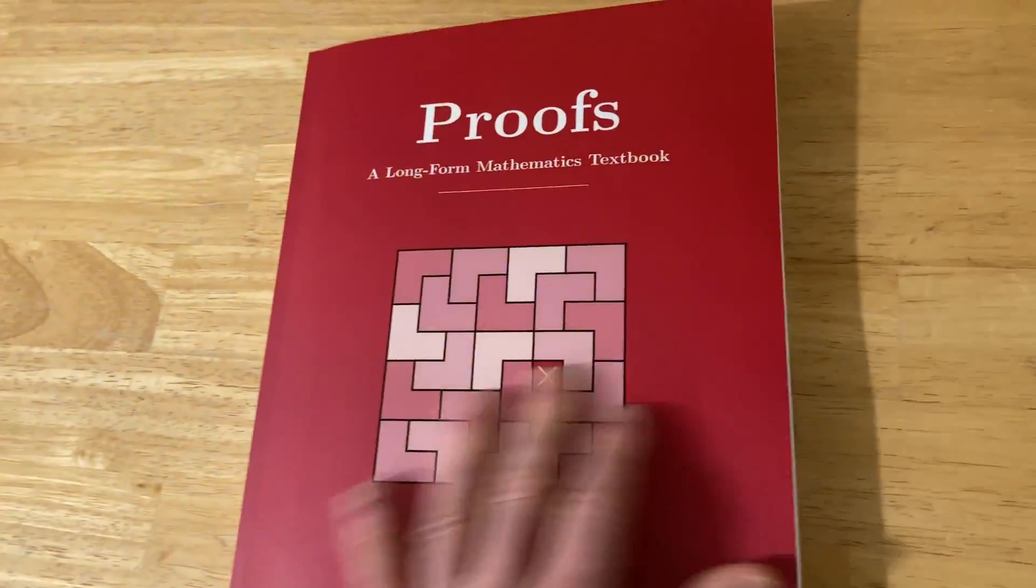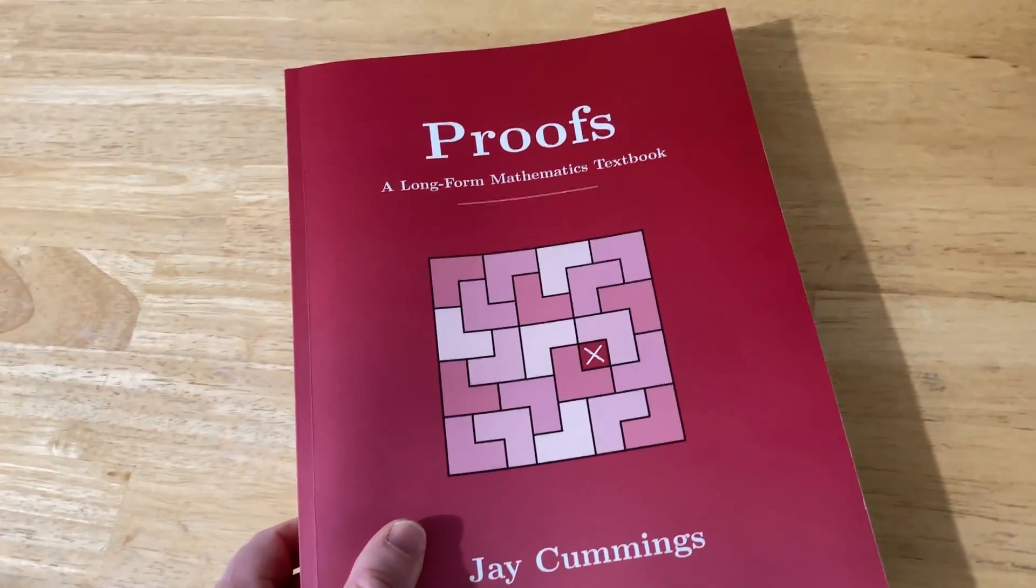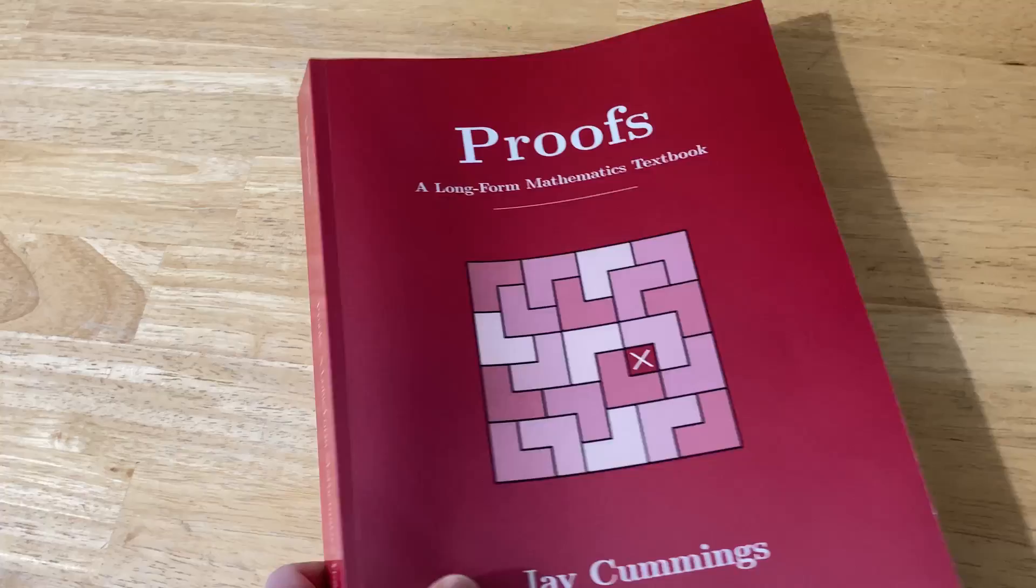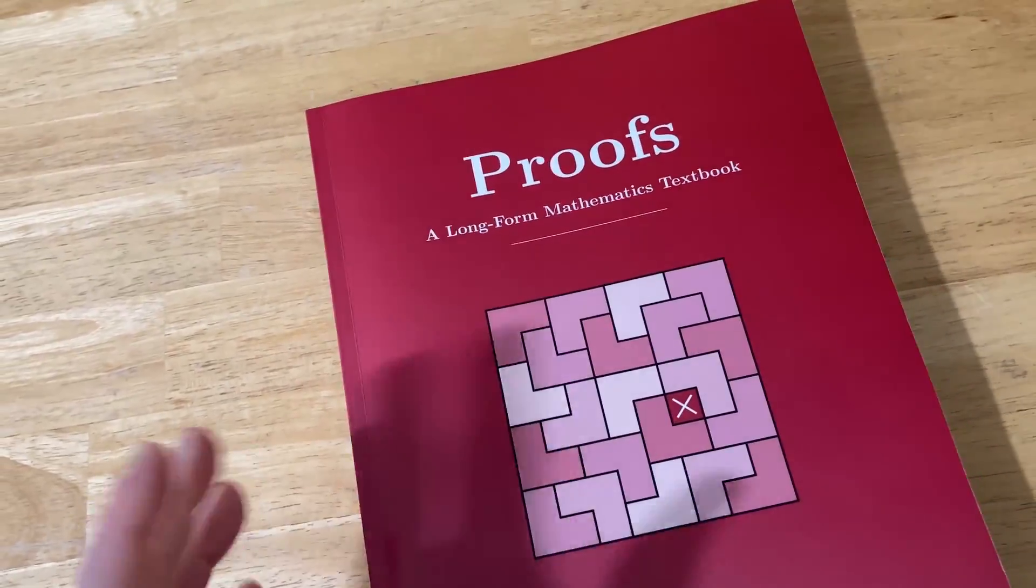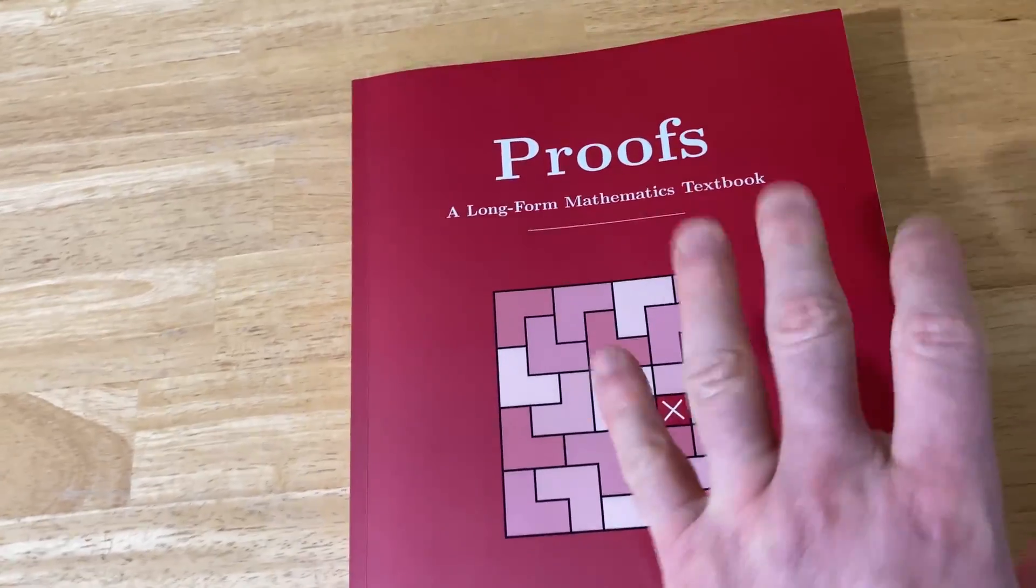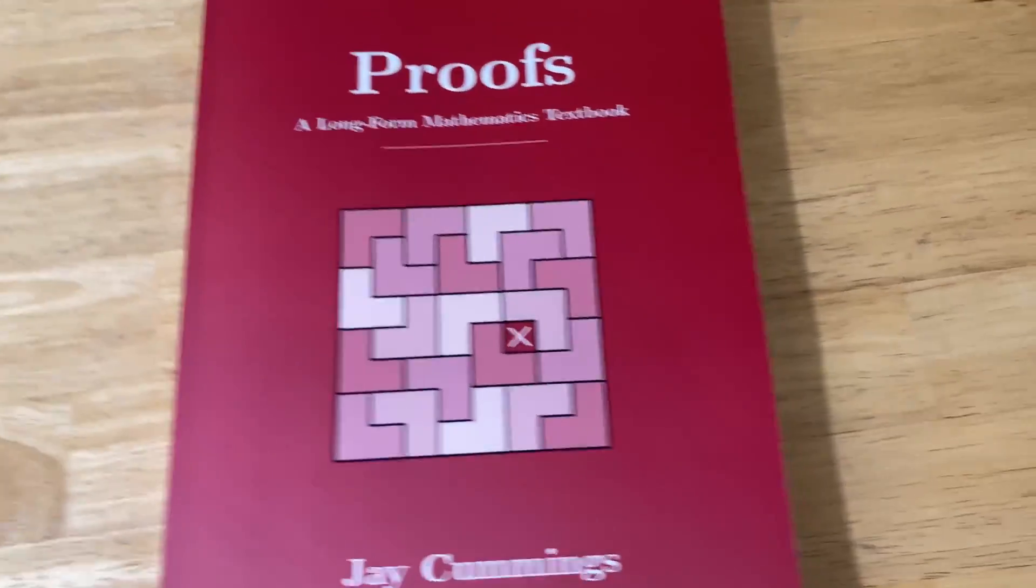The price is unbeatable. It's probably less expensive than 99% of other proof writing books out there. I mean, you can get this new. This is a brand new copy. You can get this new for not so much. And I will leave a link in the description to this book, and other books by Jay Cummings.